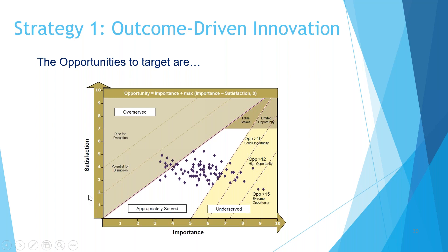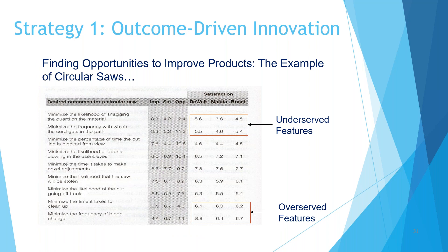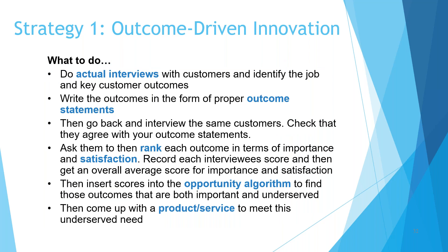Looking at the graph, the under-served items — things very important to people but that people aren't particularly satisfied with — represent the greatest opportunity. Similarly, doing the assessment against your competition: if the competition is serving something really well and you're not, that's an opportunity to close the gap. If there are over-served features, it's an opportunity to potentially strip costs out of your offering without impacting on your customer's user experience.